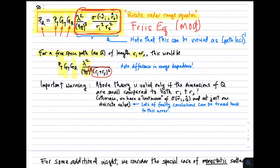There is a significant difference in range dependence. In the bistatic equation, the range dependence is R sub I squared times R sub S squared — an overall fourth power exponent. In the free space case, the range dependence is (R sub I plus R sub S) quantity squared. So not only are we talking about multiplication versus addition, but the exponent in the scattering case is effectively the fourth power, representing a significant difference in how path loss works in these two scenarios.